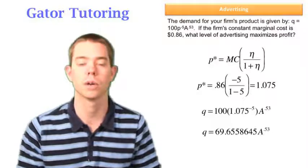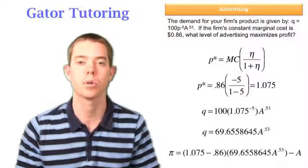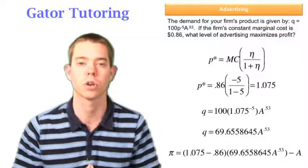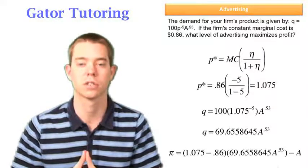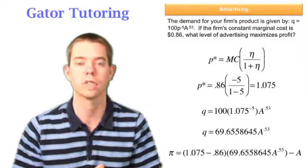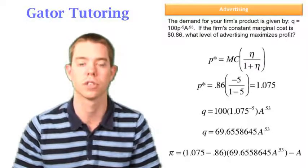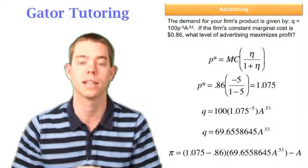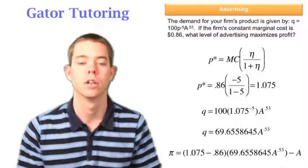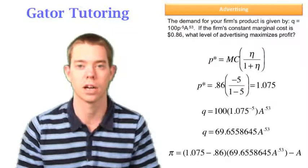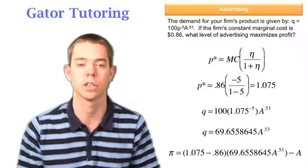Now we're ready to write profit. We know that profit is equal to price minus marginal cost all times quantity minus cost in this case because we have the cost of advertising separate from that marginal cost. It's going to be an additional minus A on the end of the profit function, which is our level of advertising. So we have to account for the cost of advertising, which is a common mistake that people forget to do.